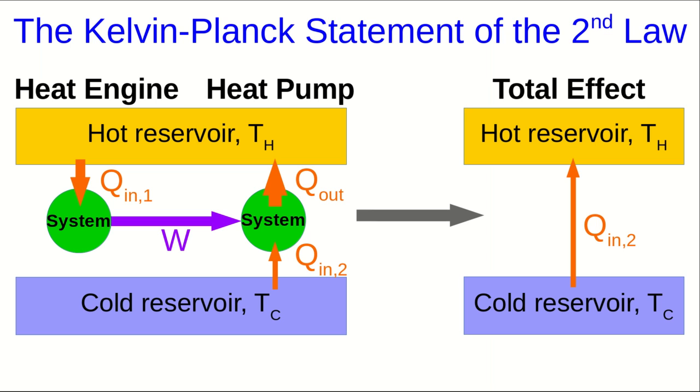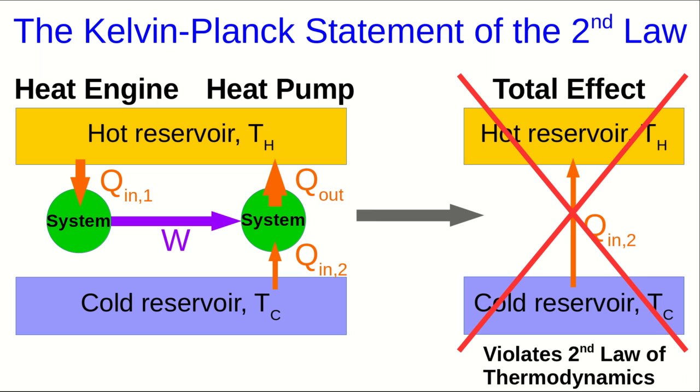If we define our system as the heat engine, the heat pump, the hot reservoir, and the cold reservoir, this is now an isolated system. It's an isolated system where thermal energy is going from cold to hot, meaning this is evolving from more likely states to less likely states. That is a violation of the second law of thermodynamics. So this shows us that a heat engine with an efficiency of one is impossible, because if any such thing existed, it would allow us to violate the second law of thermodynamics.